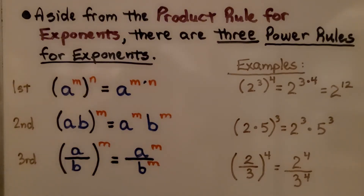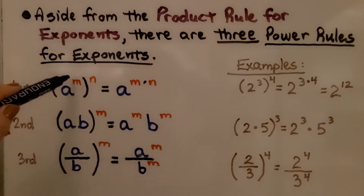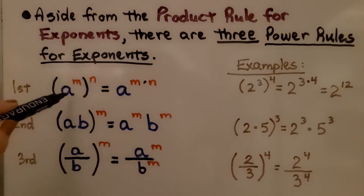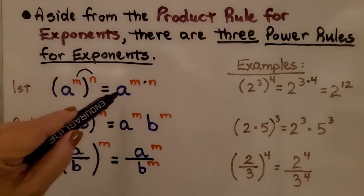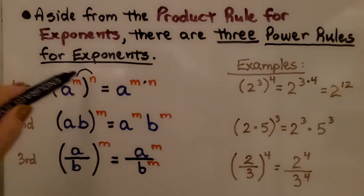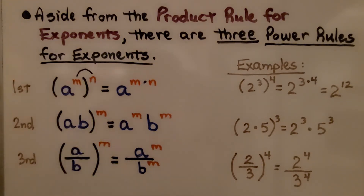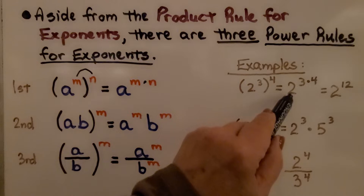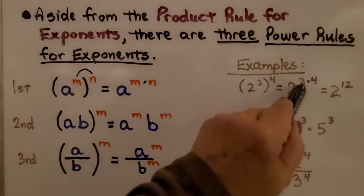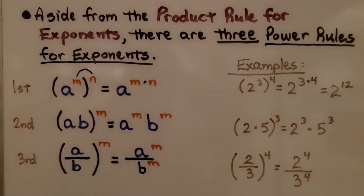Aside from the product rule for exponents, there are three power rules for exponents. The first one: we have some number a raised to the m power in parentheses, then raised to the n power — that's the power of a power. We just multiply these two exponents together to get a to the m times n. An example would be 2 to the third power raised to the fourth power — we would have 2 to the 3 times 4, which is 12, so we would have 2 to the twelfth power.